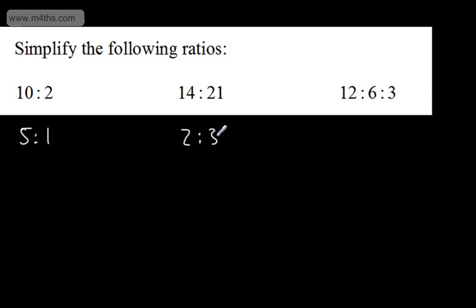Often it's a case of either spotting it or just breaking them down by trying to halve them, divide by three, divide by five — all of your prime numbers. If I look at this one, I've got three parts: 12, 6, and 3. We can divide each of these by three, so I could write that as a four to two to one ratio. So that is now fully simplified.